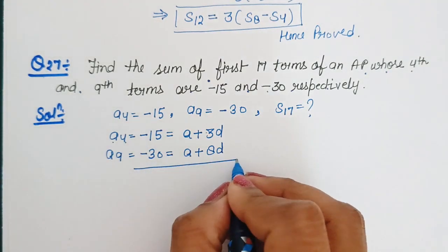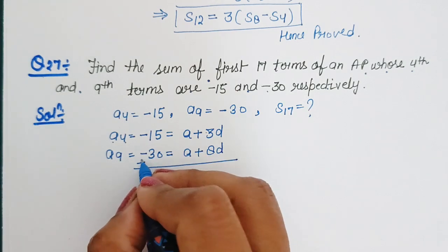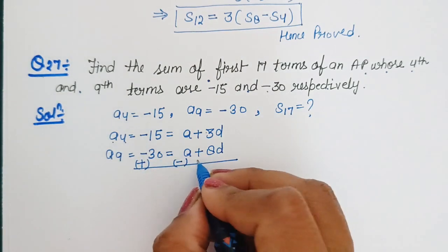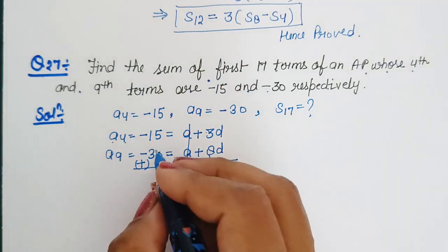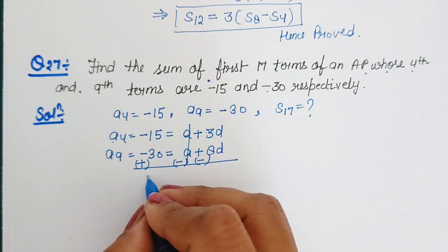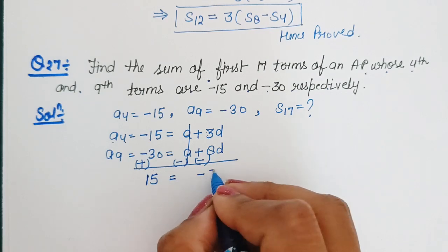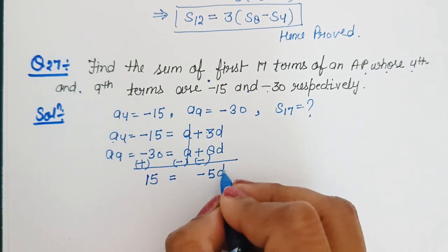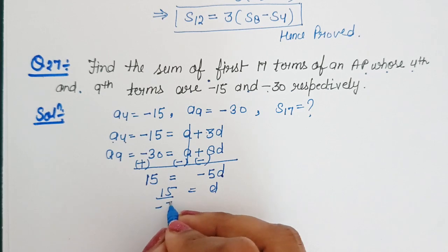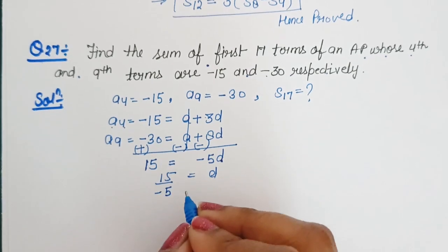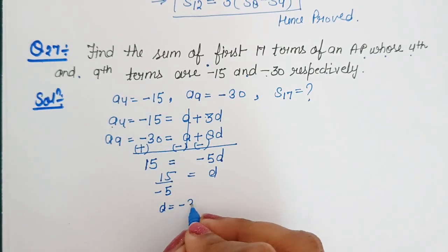Abh yahan pe humein inko subtract karna hai. Plus ka sign minus ho jayega, aur ye values cancel out ho jayengi. Humein value mili 15, which is equal to minus 5 times D. Aur D ki value humein mili 15 upon minus 5. It means D is equal to minus 3.